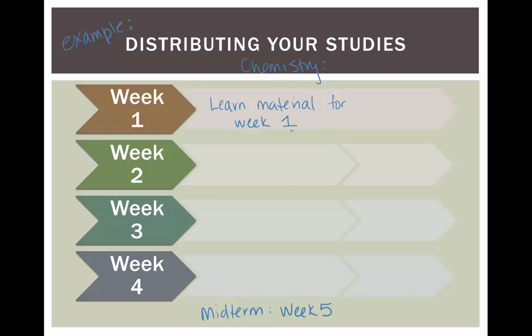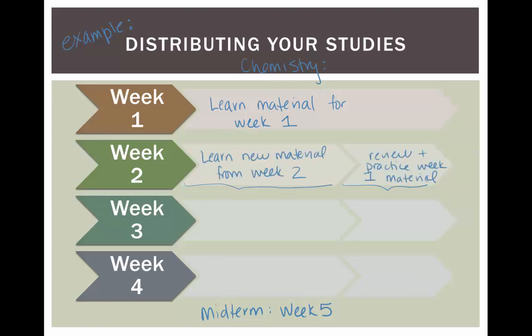As a general rule, try spending 80% of your chemistry study time during week 2 on new material from that week, and 20% of your time doing review problems or practicing test questions from week 1 material. The following week, you'll spend 80% of your time on new material and 20% reviewing information from weeks 1 and 2.